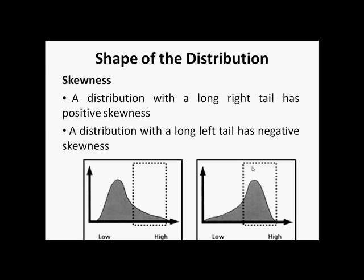In this case, more data points are concentrated to the left of the mean, which means the data set has a long left tail. Since more data points are concentrated to the left of the mean, such a data set is called negatively skewed, and it will have a negative skewness value.